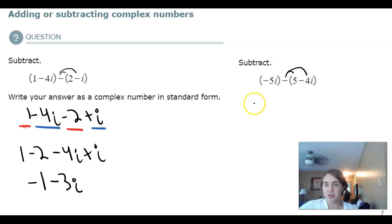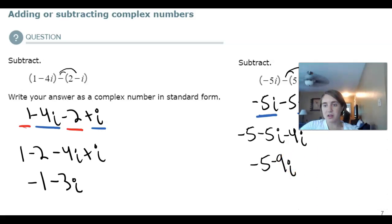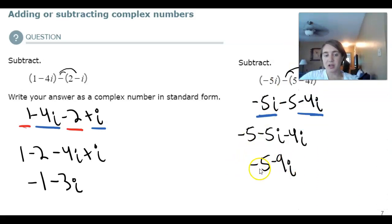Same idea over here. Negative 5i minus 5 minus 4i. I can combine my i's but I want my real number plus my imaginary number to keep it in standard form because here it asked us for standard form. So, that's a plus bi.